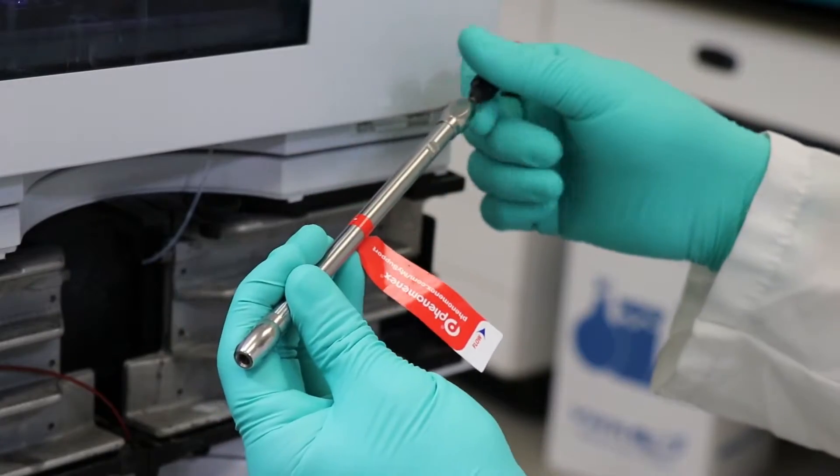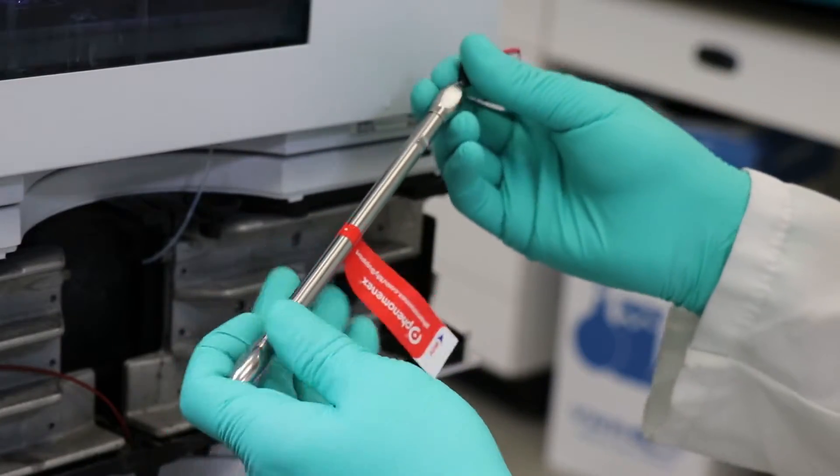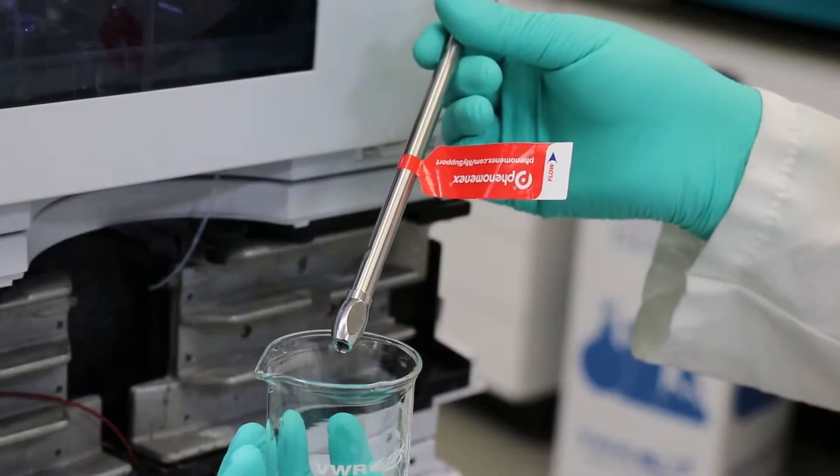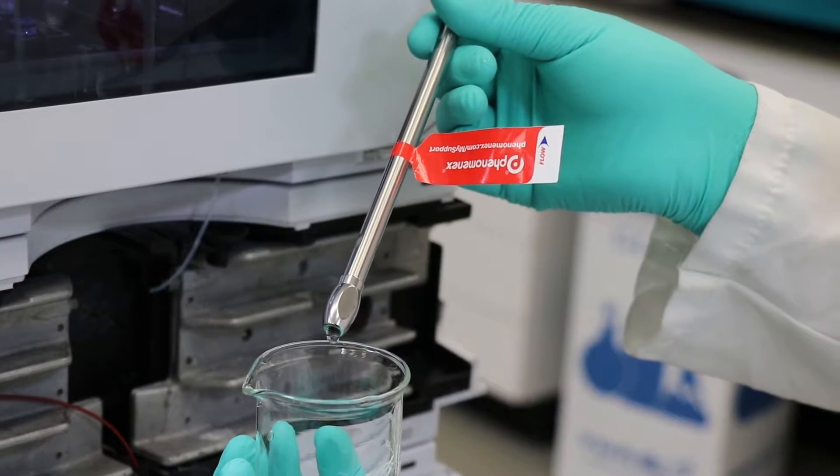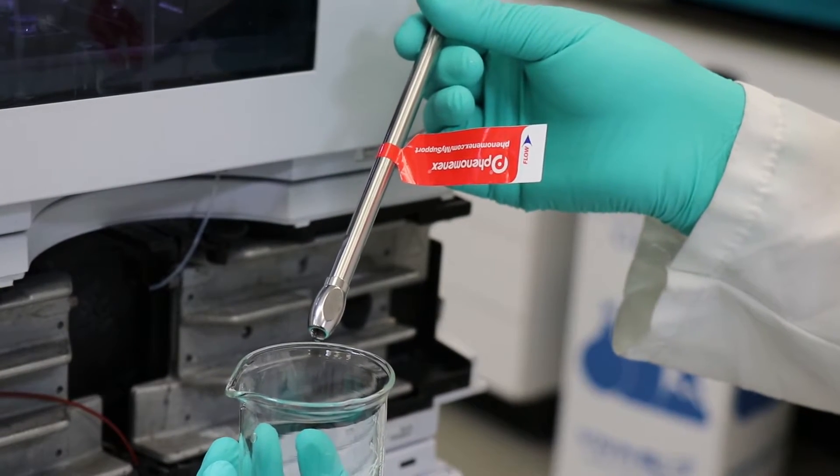So then once that's installed, if any of that particulate material comes off the head of the column, we want it to go into a beaker and not into the detector, and that's what we're doing here.